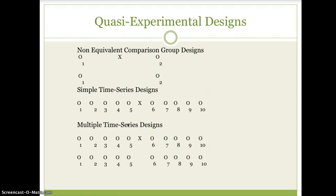There are three types of quasi-experimental designs explained in the text by Rubin and Babbie. The first is non-equivalent comparison group designs. They are used when two groups appear similar but they have not been randomly assigned.